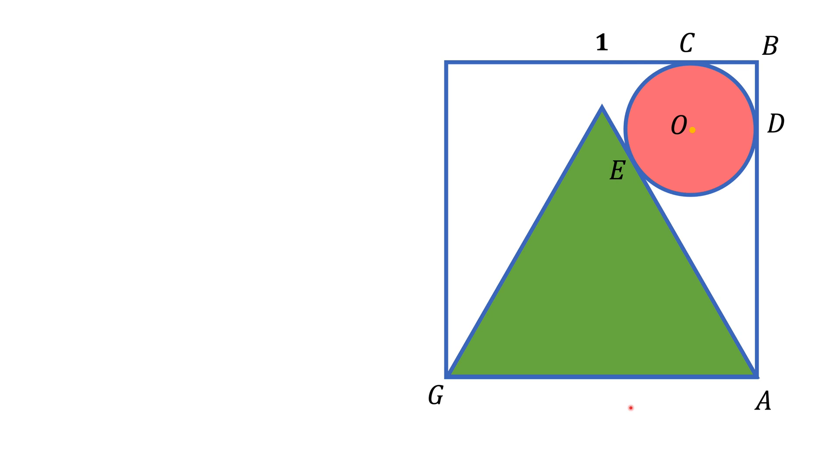Here we have a square with a side of 1. Inside of the square we have an equilateral triangle with a side of 1 as well. And we also have a circle that is tangent to two sides of the square and one side of the triangle. The points of tangency are C, D, and E. And we are asked to find the radius of this circle.